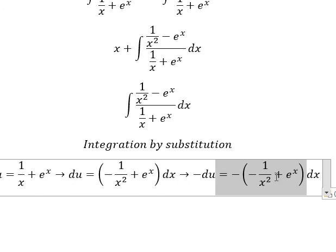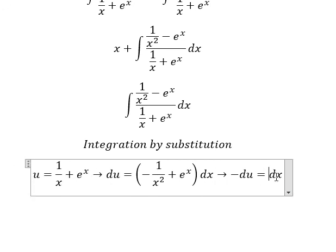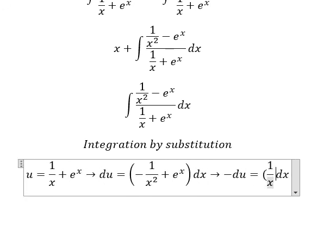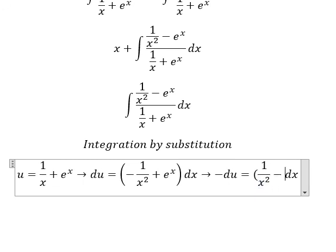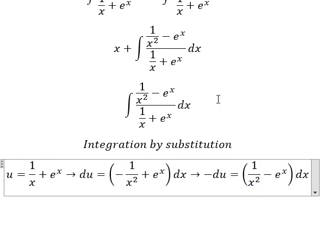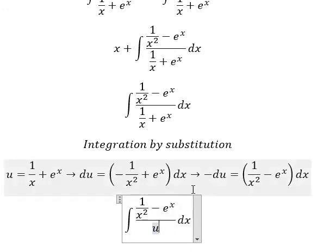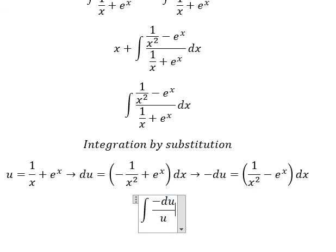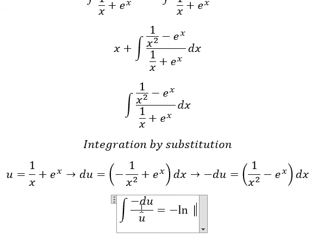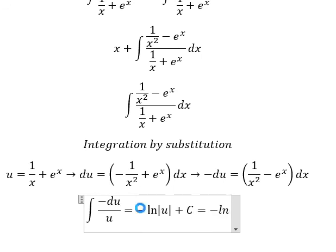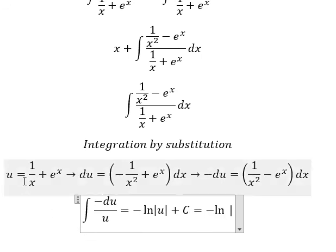So this one will change by u. This one will change into one over s squared minus e to the power of s, so this one will change by u and this one will change by negative du. The integral of this one gives us negative ln of the absolute value of u, and we put about c. About u, that is about this one.